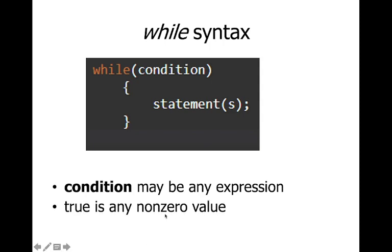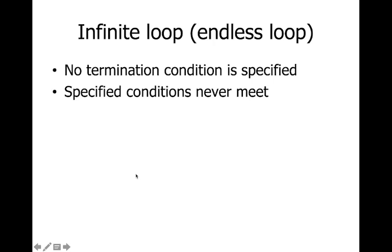In C, true is any non-zero value. When the condition evaluates to a non-zero value, the statements execute; when it becomes zero (false), the loop exits. There are also infinite loops, called endless loops. If the termination condition is not specified or the specified condition never becomes false, it is known as an infinite loop.